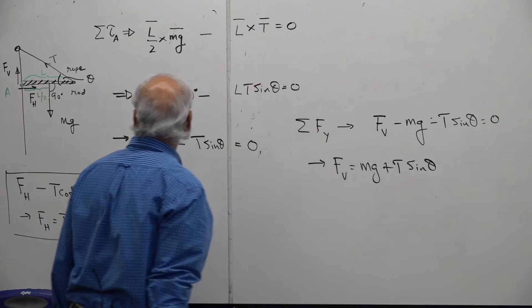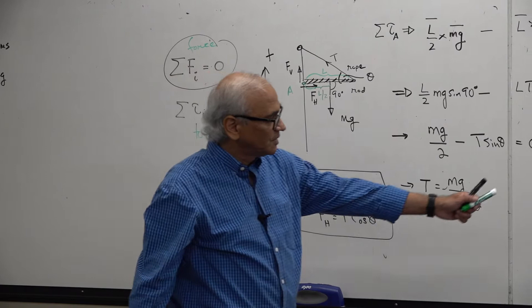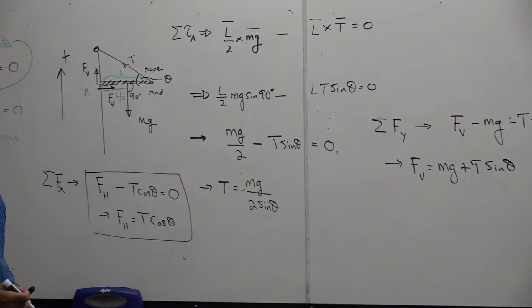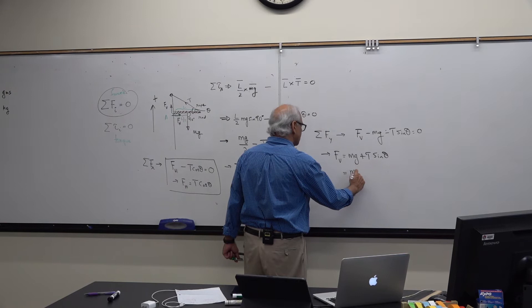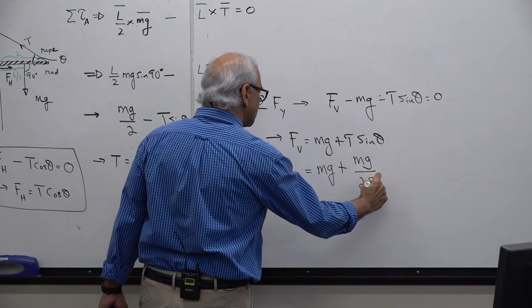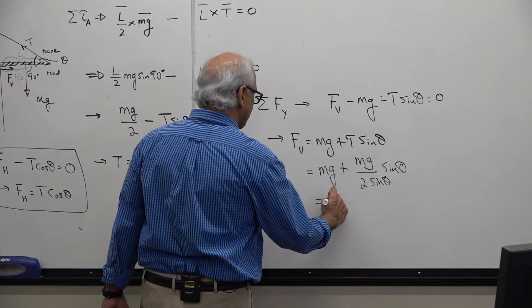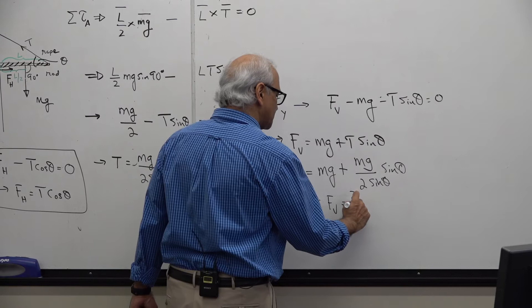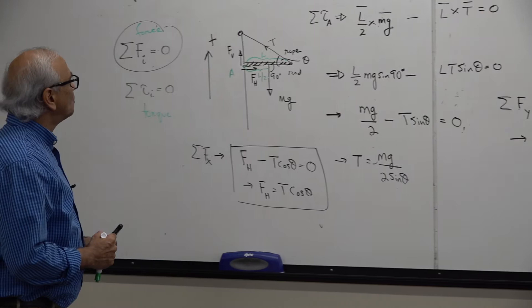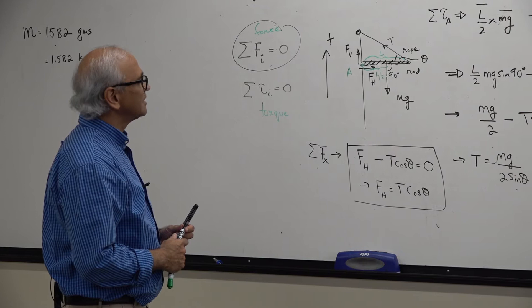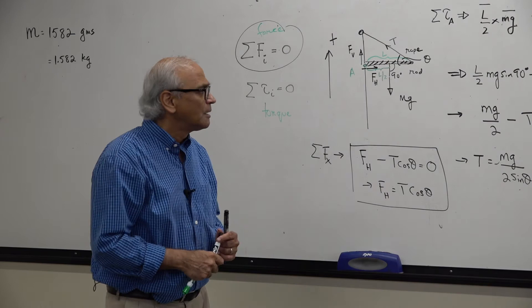You already found T from the torque equation, so you plug that in. The tension involves sin θ, so it's an interesting result — F_V = MG + (MG / (2 sin θ)) × sin θ, which simplifies to F_V = MG + MG/2. You can solve it like that.